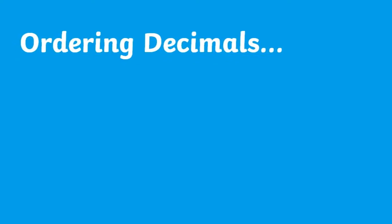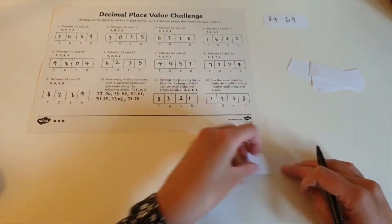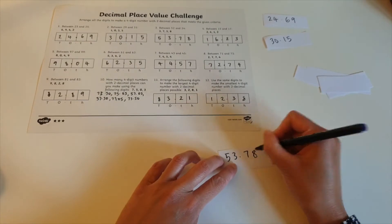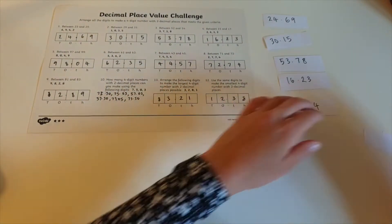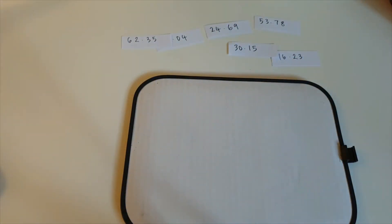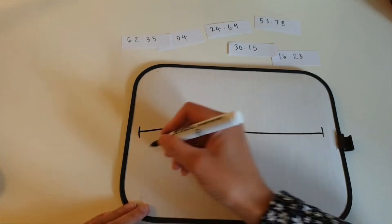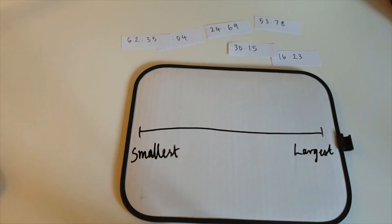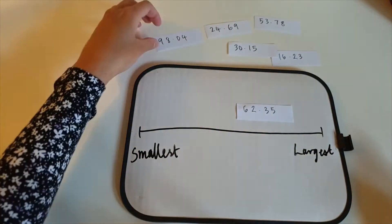Ordering decimals. Why not get your child or class to deepen their understanding of the value of each decimal further by ordering the decimals. Children could jot down each decimal number or as many as they wish on a piece of paper or on a whiteboard and order them from smallest to largest using a number line.